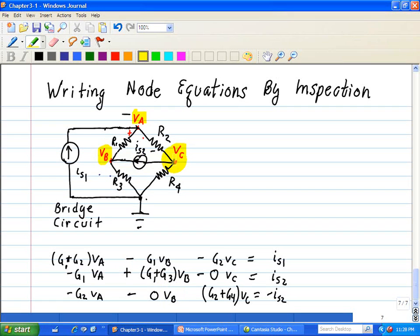Now we look at node C and see what kind of sources are entering or leaving the node. And we see it's IS2. So since it's leaving, we put a minus IS2. So that's how you do it, write node equations by inspection, after you get comfortable in following the four-step process.